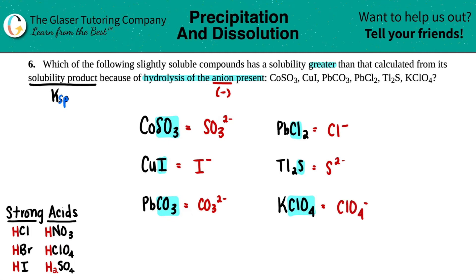Okay, so now from here, we want to figure out which one has a solubility greater. Well, what's going to happen is basically we have anions of strong acids and anions of weak acids. We have a mixture of both out of all these six. If we're looking for a solubility greater, we are looking for basically an anion from a weak acid.